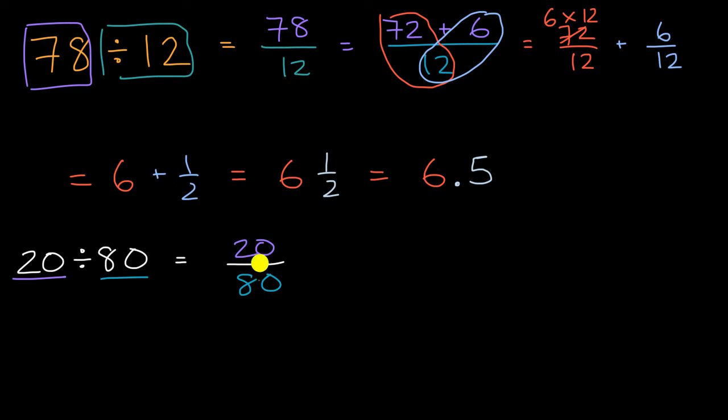And then we could think about, well, how can we simplify this fraction or re-express it in some way? Well, let's see. We can write the numerator as, we could write this numerator as equal to 1 times 20, and then we could write the denominator as 4 times 20, as 4 times 20.